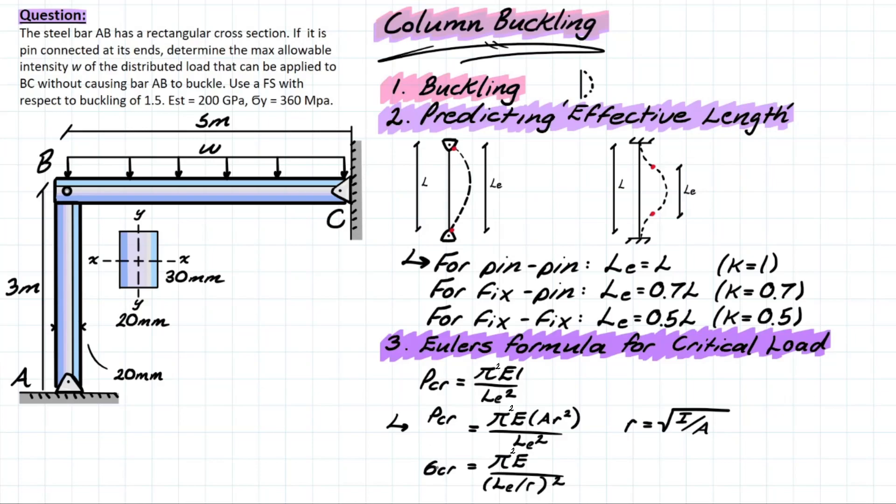If we want to, we can also represent this formula in terms of stress. If we wanted to restrict the stress that develops in a member, we can do that by simply plugging in the inertia in terms of A*r squared. What r is, is your radius of gyration, which can also be solved for like this, which is the root of the inertia of your member over the area of your member.